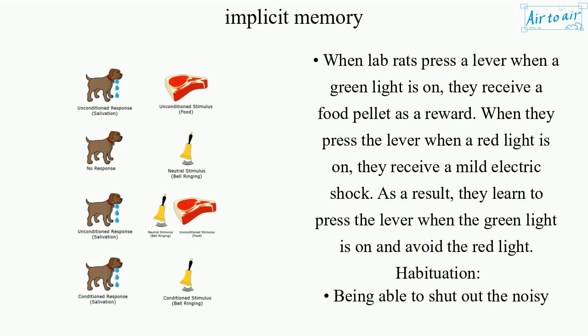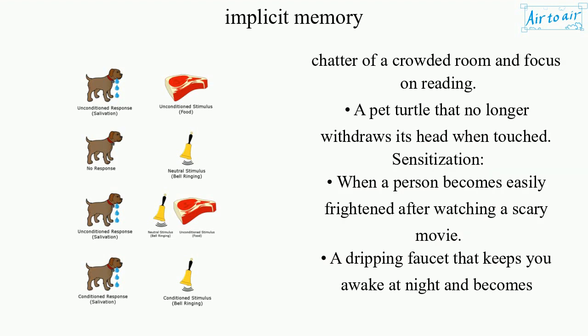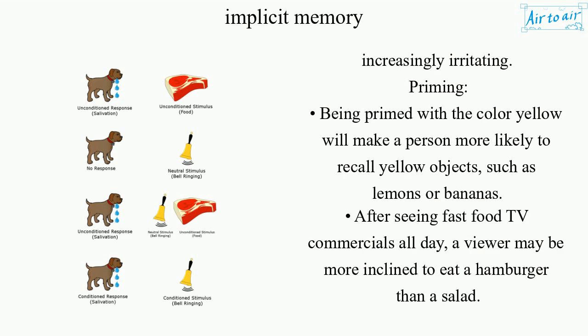An example of habituation is being able to shut out the noisy chatter of a crowded room and focus on reading, or a pet turtle that no longer withdraws its head when touched. An example of sensitization is when a person becomes easily frightened after watching a scary movie, or a dripping faucet that keeps you awake at night and becomes increasingly irritating. For priming, being primed with the color yellow will make a person more likely to recall yellow objects, such as lemons or bananas. After seeing fast food TV commercials all day, a viewer may be more inclined to eat a hamburger than a salad.